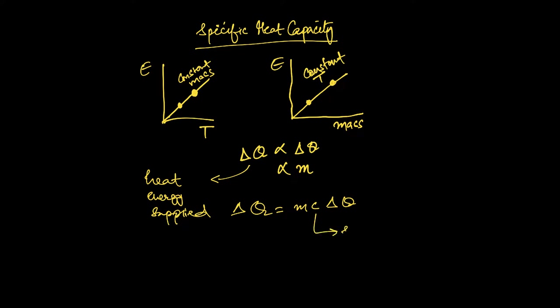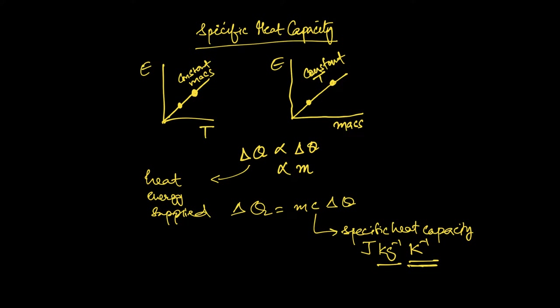This constant c is referred to as the specific heat capacity. The word 'specific' is a reference to the fact that it is per unit mass. The units of specific heat capacity are joules per kilogram per kelvin. Essentially, it tells you how many joules are needed to increase the temperature of a one kilogram object by one kelvin. It should be noted that for small changes in temperature, specific heat capacity is relatively constant over a wide range of temperatures, and unless stated otherwise you can assume it is constant.